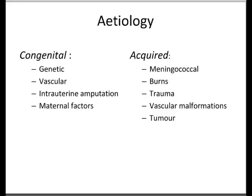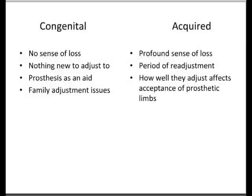A child with congenital limb deficiency — born with it — will feel no sense of loss. It's something they'll have adjusted to from day one, and they use a prosthesis as an aid to function. There are quite significant family adjustment issues, not only when the child is born but as they develop. In acquired limb loss, there's quite a profound sense of loss and a major period of readjustment that you have to counsel patients through. How well they adjust affects how they'll accept a prosthesis — some patients, under no circumstances, want a prosthesis, and it's important to counsel them about that.